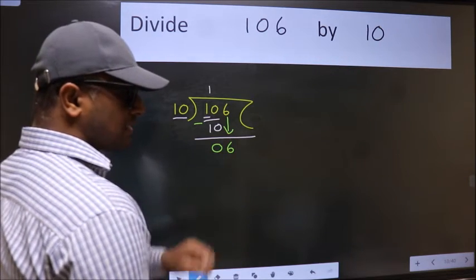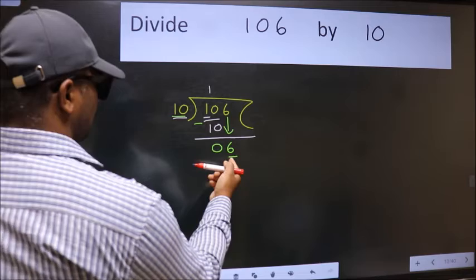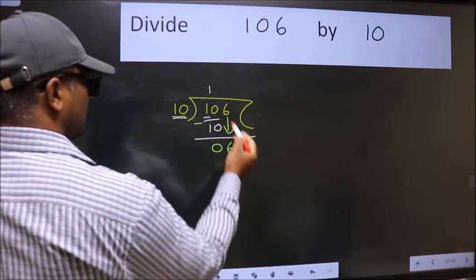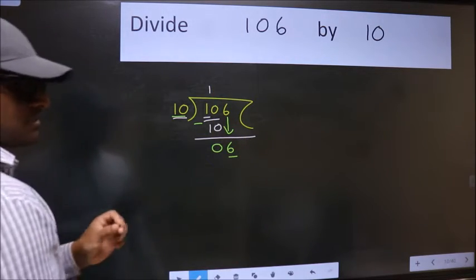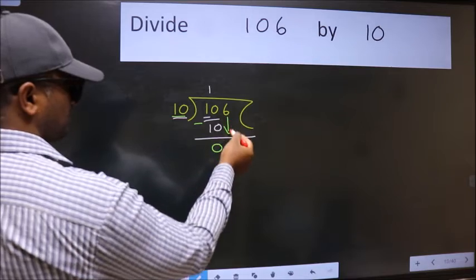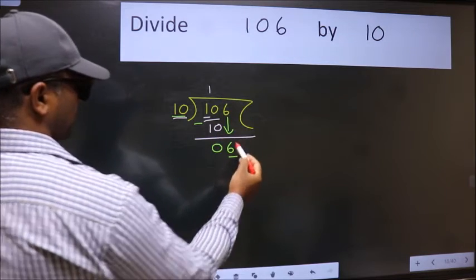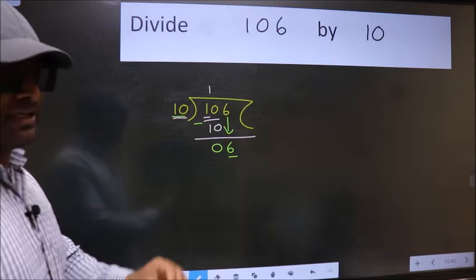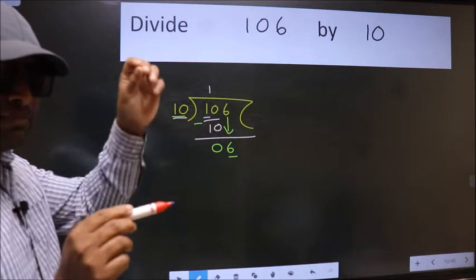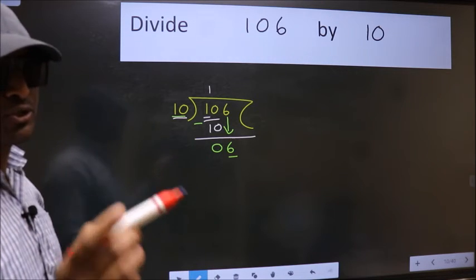After this step, the mistake happens and the mistake is this. Here we have 6 and here 10. 6 is smaller than 10. So what many do is they directly put dot, take 0, which is wrong. Why is it wrong? Because just now you brought this number down and in the same step, you want to put dot, take 0, which is wrong. I repeat. Bring down the number and also put dot, take 0. Both at the same step, you should not do.